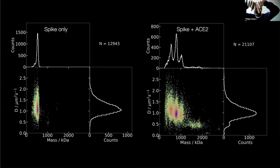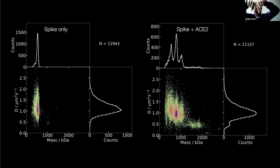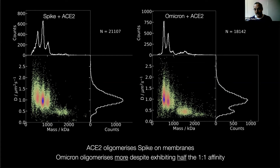For Omicron versus the original strain, you see the same thing again, but not only can you see the dimer of spike, you can even see the trimer of spike. So despite Omicron binding weaker one-to-one, you can directly observe that the ACE2 is oligomerizing the spike — cross-linking different spikes together.